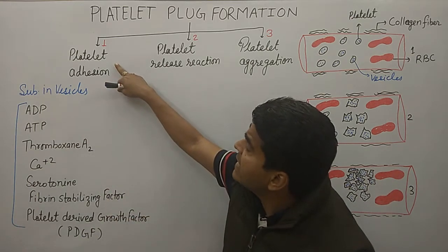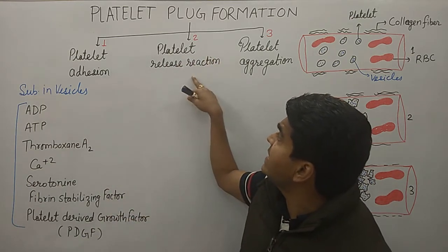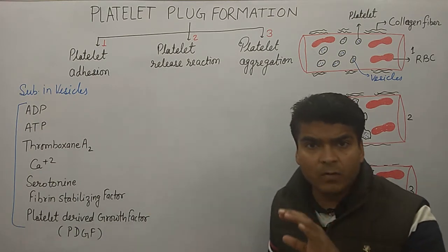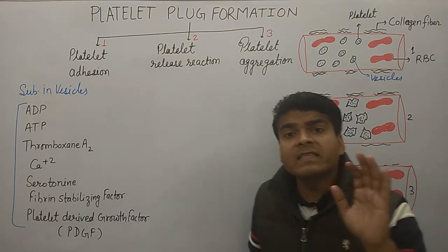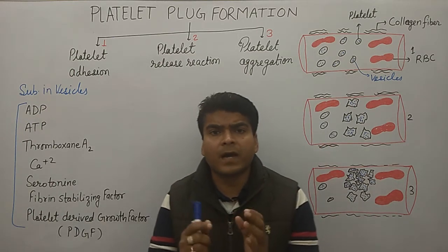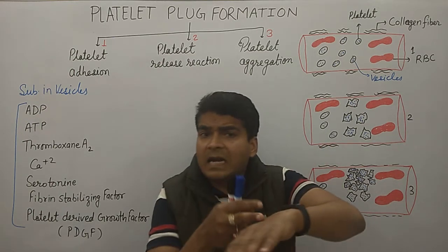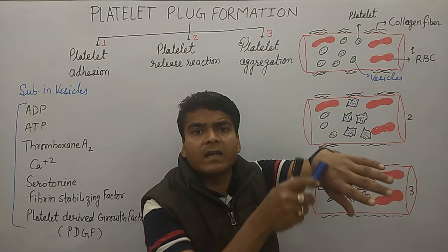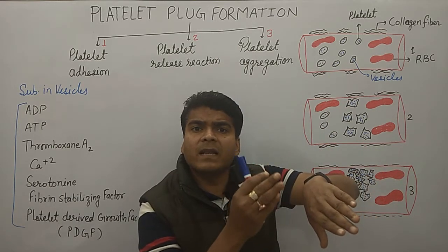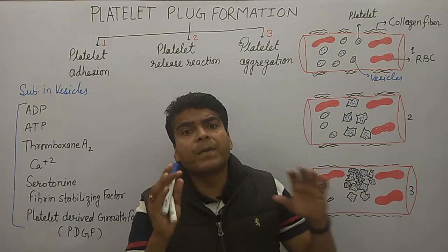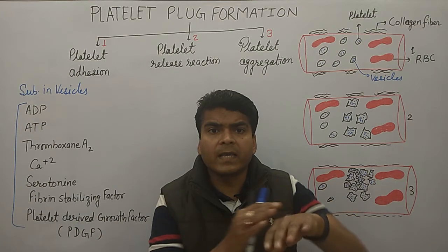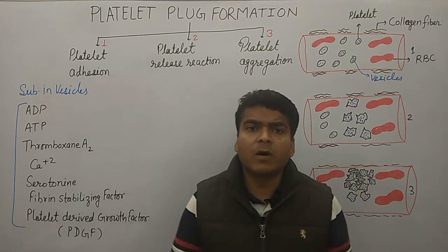Platelet plug formation has three steps: first is platelet adhesion, second is platelet release reaction, and third is platelet aggregation. Let me give a basic example. When a cut occurs, blood will come out. At that time, what will platelets do? They will block that site.